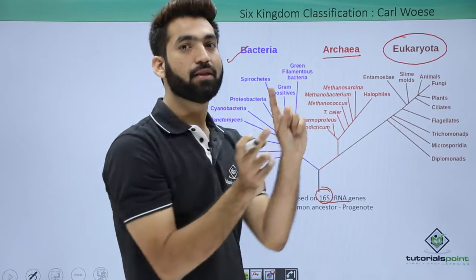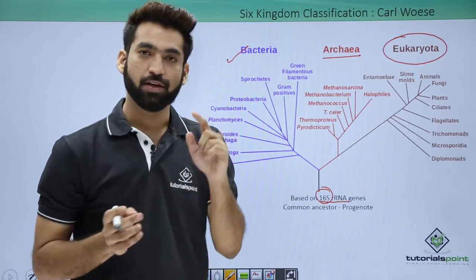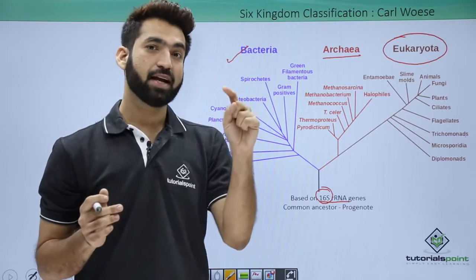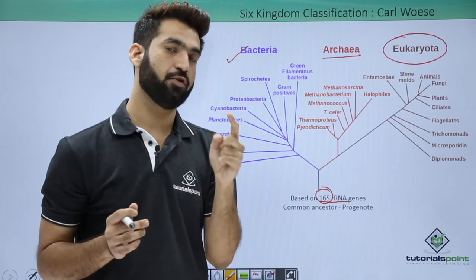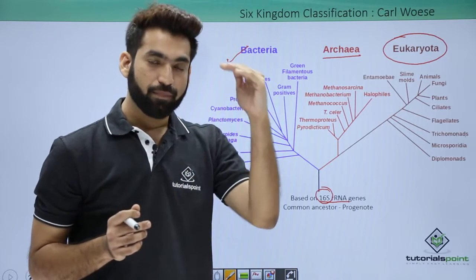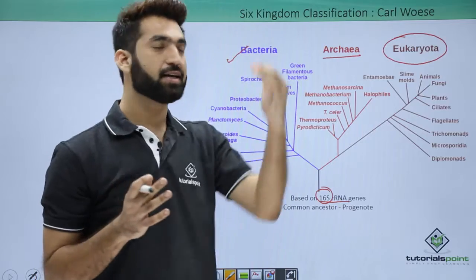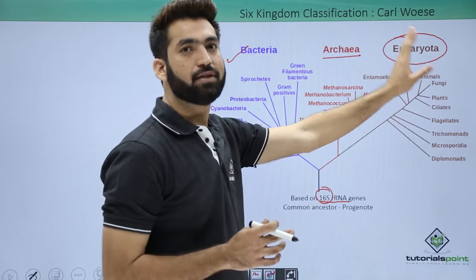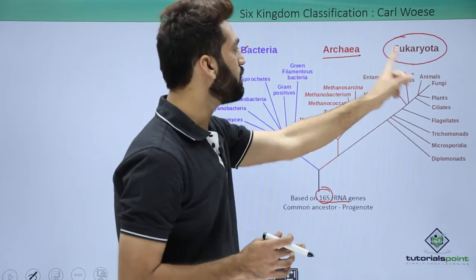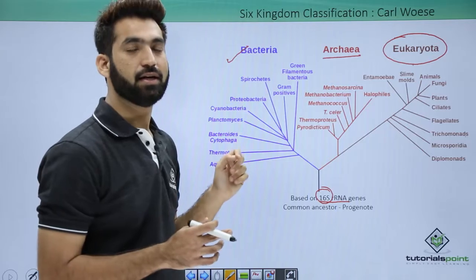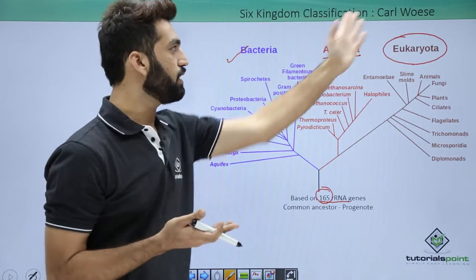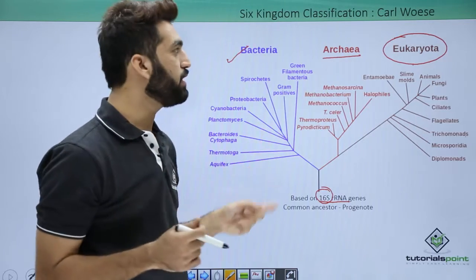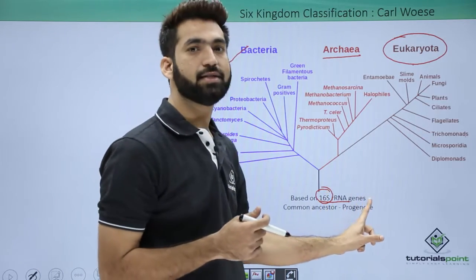These groups are called domains. Always remember that domain is the higher taxonomic category — when talking about the vertical taxonomic hierarchy, kingdom was the highest obligate taxonomic category, but above kingdom there is a higher category called domain. So Woese classified all organisms into three domains and gave three domains of life: Eukaryota, Archaea, and Bacteria. The strategy used to define these three domains was the 16S rRNA genes.